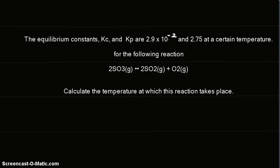The equilibrium constants Kc and Kp are 2.9 × 10^-2 and 2.75 at a certain temperature for the following reaction. The reaction is the decomposition of SO3. Calculate the temperature at which this reaction takes place.